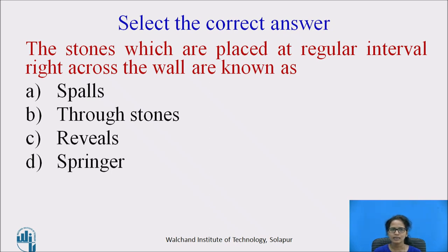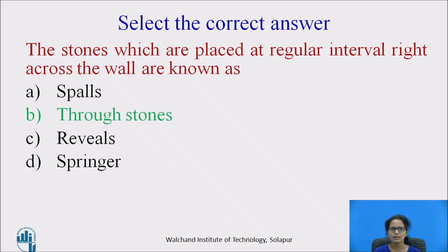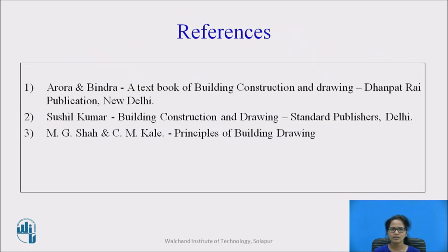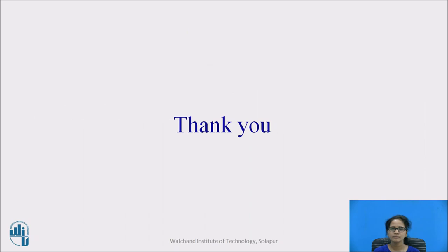Practice questions: Stones placed at regular intervals right across the wall are known as — spalls, through stones, reveals, or springer? The correct answer is through stones. What should be placed at the beginning of every header course in English bond to avoid a continuous vertical joint — queen closer, half bat, three-quarter bat, or king closer? The correct answer is queen closer. These are the references. Thank you.